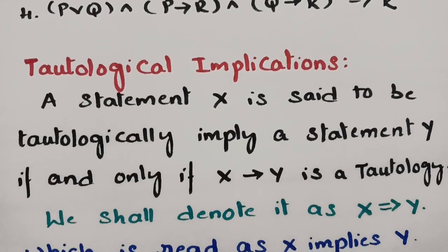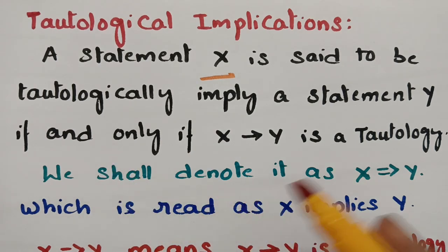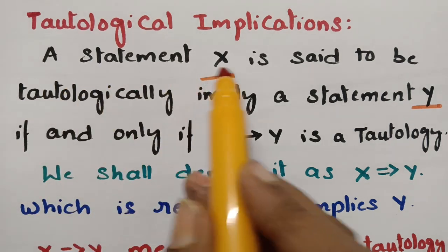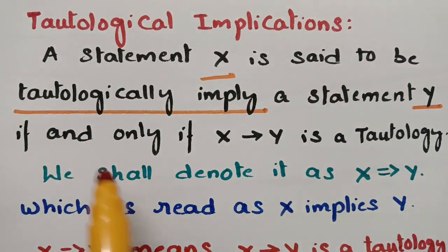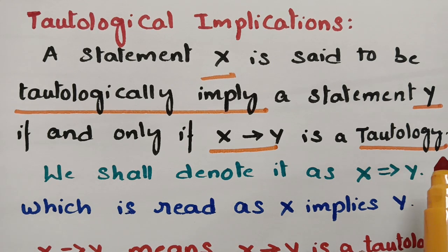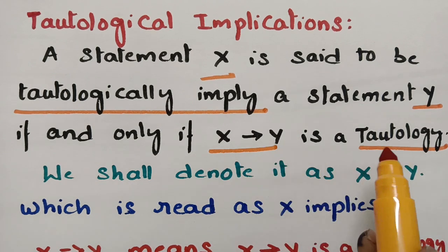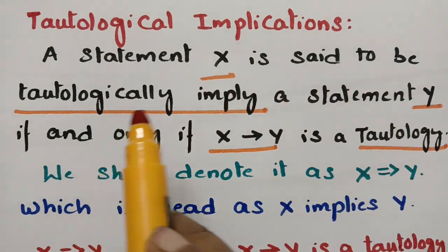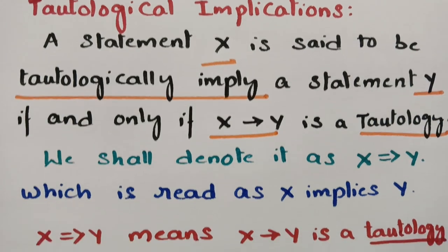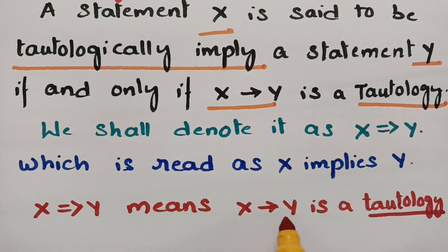Here is the definition: a statement x is said to tautologically imply a statement y if and only if x implies y is a tautology. A tautology means the end statement in the truth value table is all true. We denote this as x double implies y, which is read as: x implies y is a tautology.